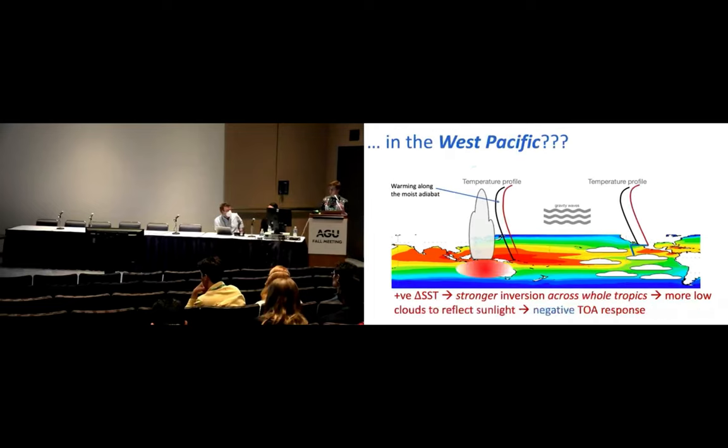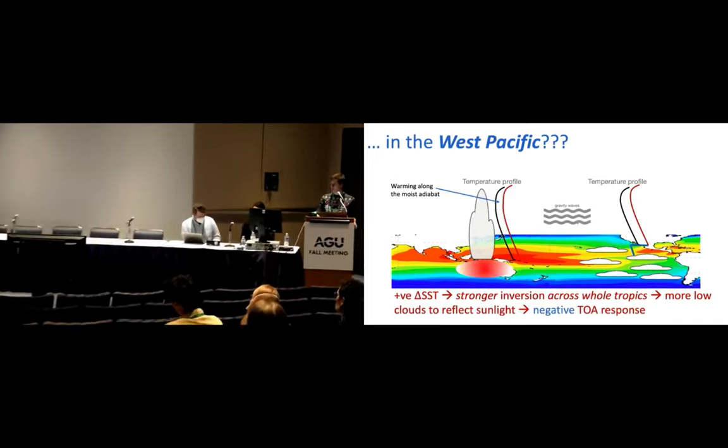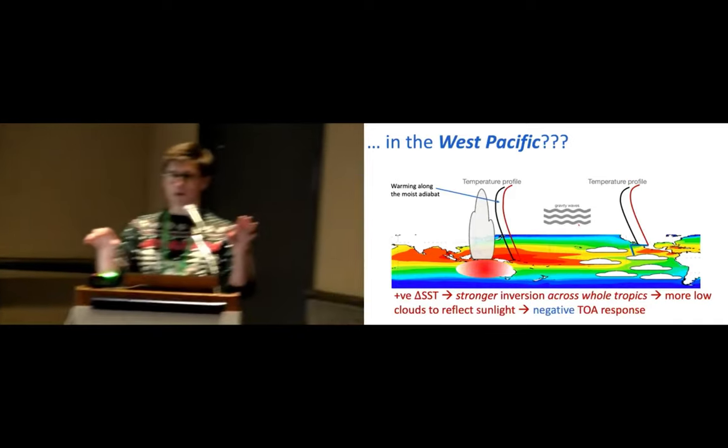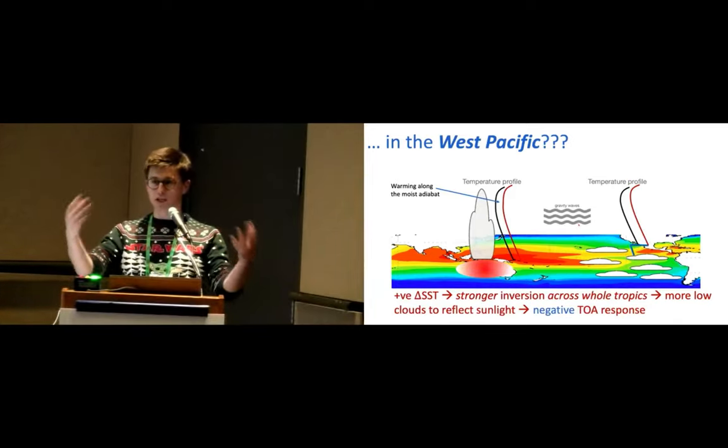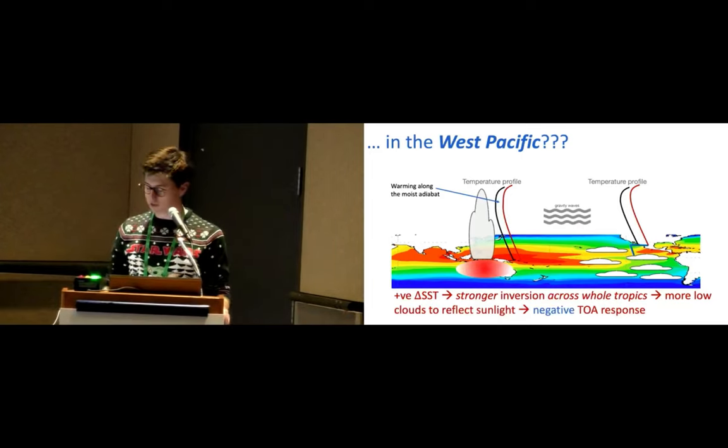But instead, if you warm in the Western Pacific, what you do is you basically put the whole atmosphere onto a warmer moist adiabatic locally. That temperature profile again gets transmitted over to these regions of low clouds and subsidence, and you get a stronger inversion, more low clouds, and that's a negative TOA response. So basically where you put the warming can set off these kind of circulation mechanisms, which give you vastly different TOA.